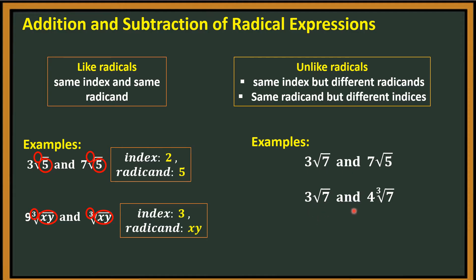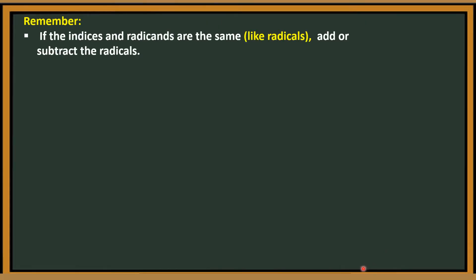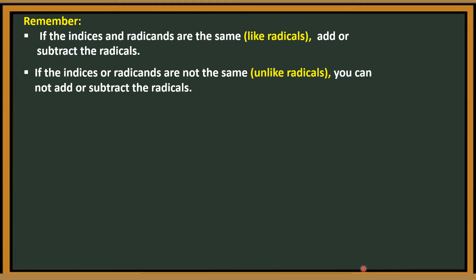Another example: 3 square root of 7 and 4 cube root of 7. The index of the first is 2 and the other is 3, so they are different in indices — even though they have the same radicand, this is considered unlike radicals. Always remember: if the indices and radicands are the same, they are like radicals and we can add or subtract them. If the indices or radicands are not the same, they are unlike radicals and you cannot add or subtract them.